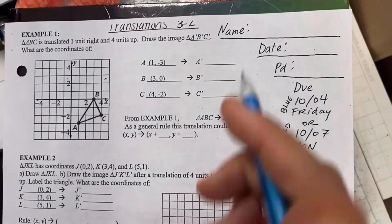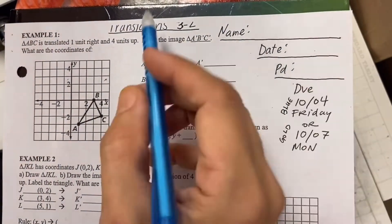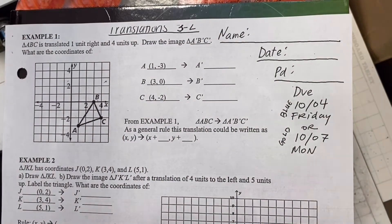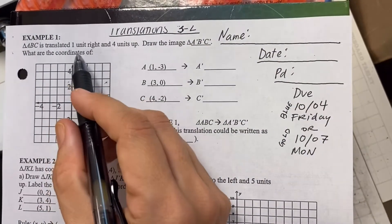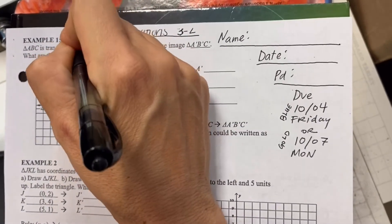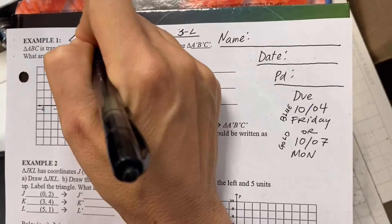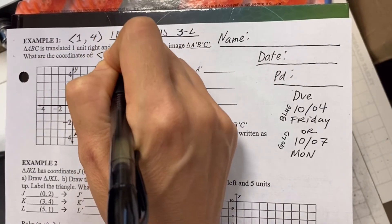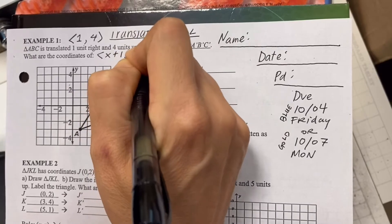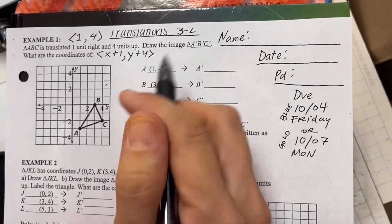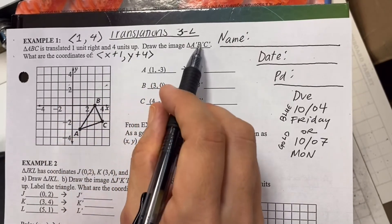Hi. This is the homework for Translations 3-2. Let's take a look. It says ABC is translated one unit right and four up. So we've seen before that would look like this, or on our last homework we also talked about they could show it like that. So what do we do here?